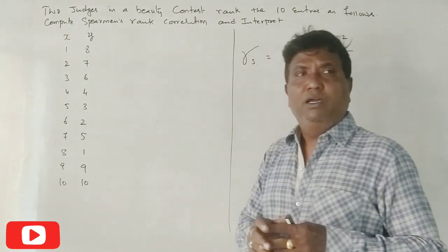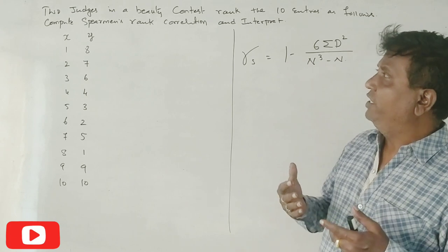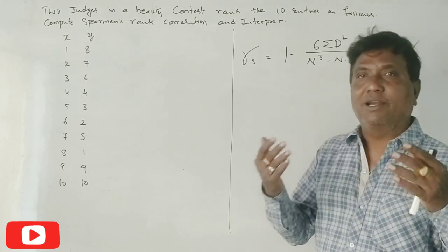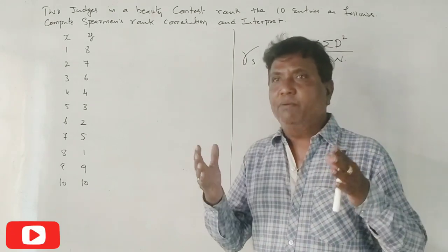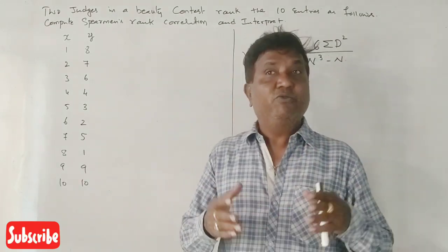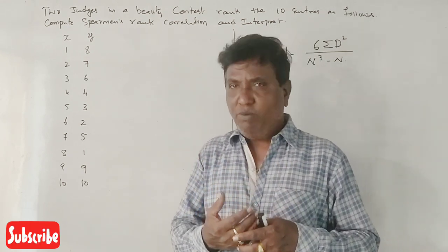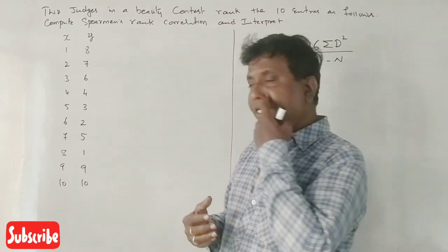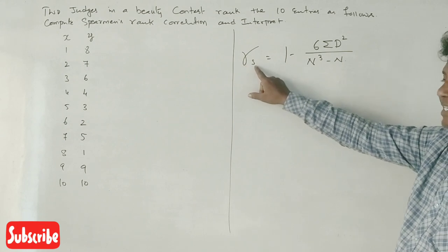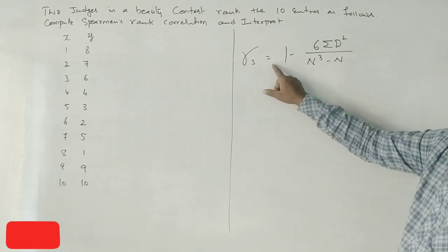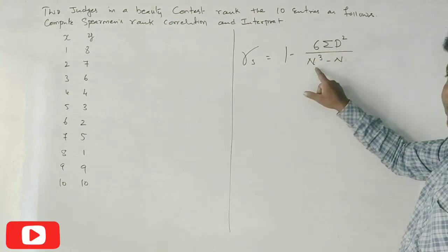Students, now coefficient of correlation - this is Spearman's Rank Correlation. Now two variables, ranking them. The relationship, we calculate it with this formula. Spearman's rank correlation: rs equals 1 minus 6 times summation d squared divided by n cubed minus n.